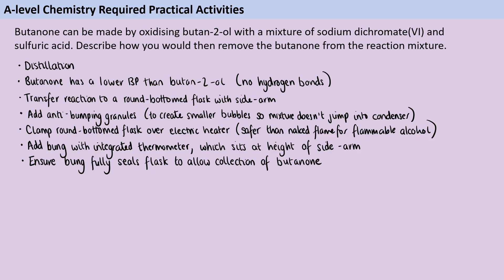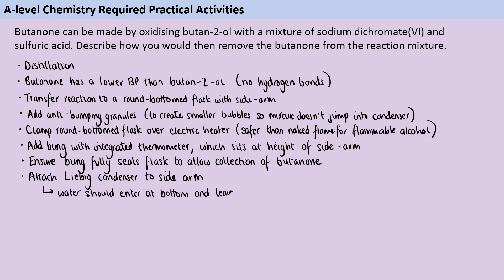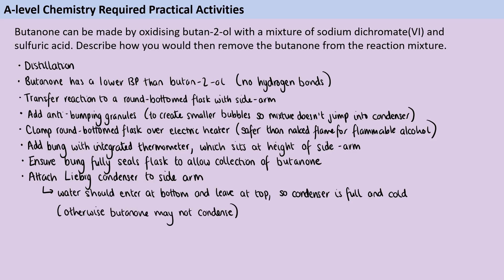You're going to need to have a Liebig condenser, which attaches onto the sidearm and is where we're going to be collecting the butanone through. I probably wouldn't write this in a method, but it's really important that the water is entering at the bottom and leaving at the top, because that way the condenser will actually fill up and be full of cold water. If you don't do that, there's a good chance it'll get too warm and your product won't actually condense. This has come up a couple of times as a spot-the-error question, where students have their condenser attached to the taps the wrong way around.